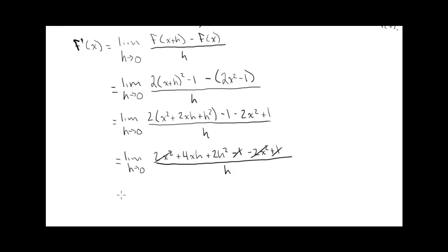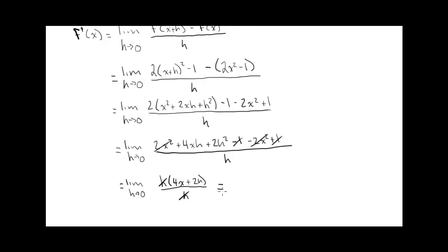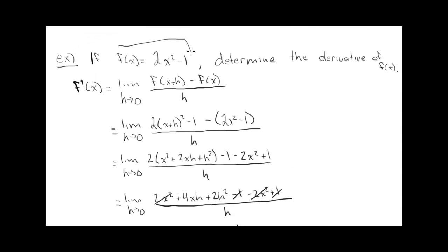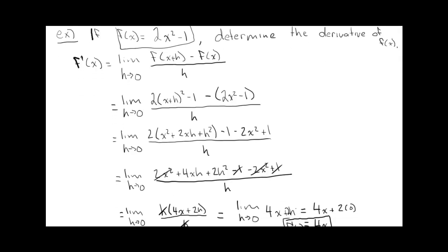And now notice a lot of stuff kind of cancels out. So you've got a 2x squared, a minus 2x squared, a minus 1, and a plus 1. So that's the limit as h goes to 0 of, and now let's factor out an h. So we're left with 4x plus 2h all over h. And notice we can do that because h does not equal 0. So you have 4x plus 2h. And now if you let h actually go to 0, this is going to become 0. We can use direct substitution now because we don't get 0 over 0. And then you just get 4x. So f prime at x is equal to 4x. So the derivative of that original thing, the derivative of this function is this function down here.